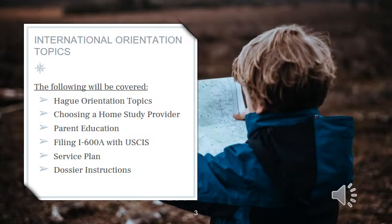There's a link posted here and in the email for password help should you require it. In this video, we will review the Hague Orientation topics for Taiwan. We'll also discuss choosing a home study provider, briefly touch on parent education, filing the I-600A with United States Citizenship and Immigration Services, explain the service plan, and the dossier instructions for Taiwan.